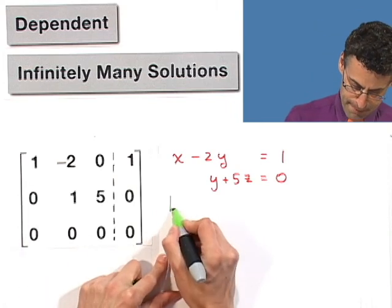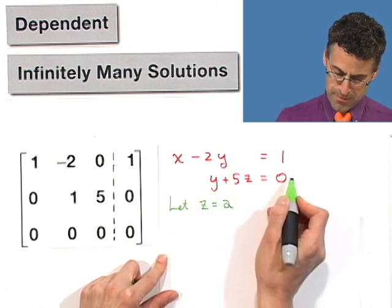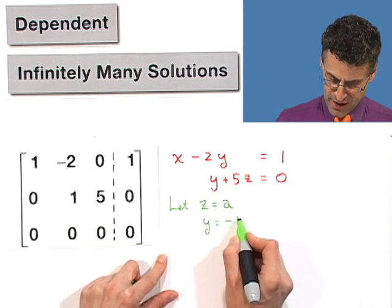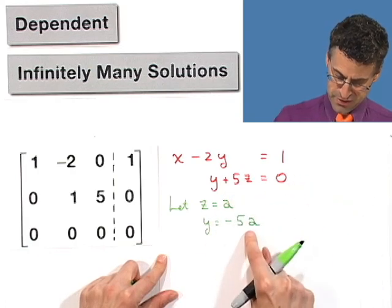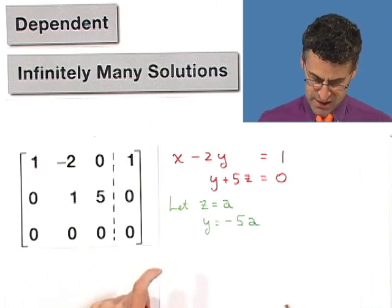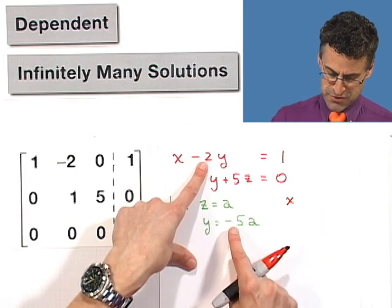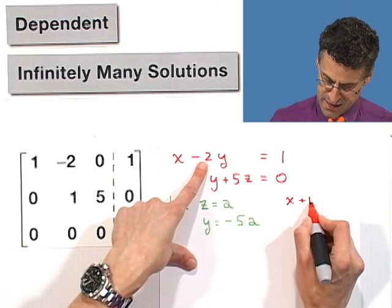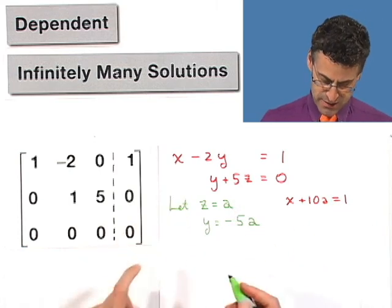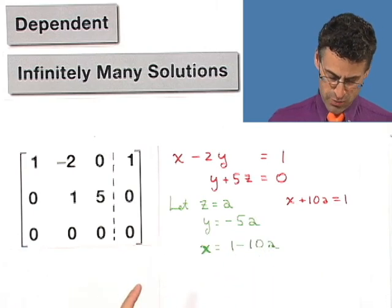So let's let z be some unknown parameter. I'll call it a. Armed with that, I can now back substitute and solve for y here. That tells me that y equals negative 5a, because I plug in a here and then bring that over to the other side. And then if I substitute that into here, I can figure out exactly what x should be. Because I know that x minus 2 times y, which is negative 5a, so negative 2 times negative 5 is positive 10a equals 1. And that tells me that x has to be 1 minus 10a.